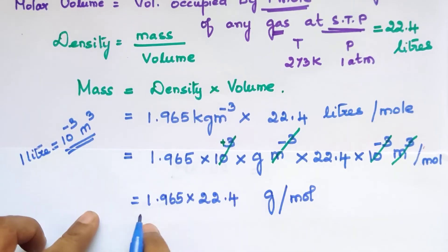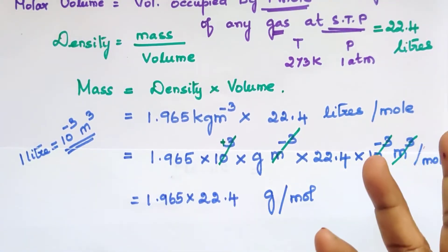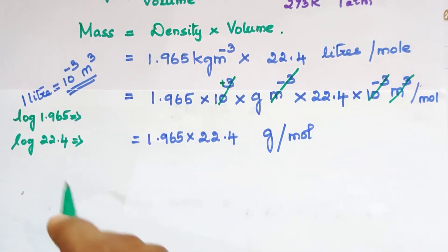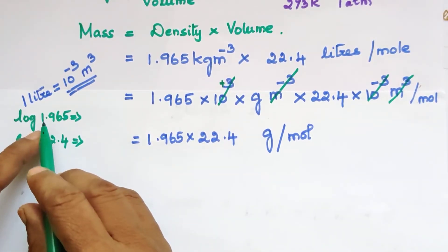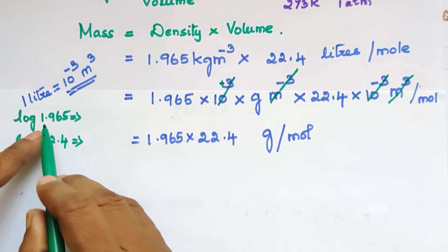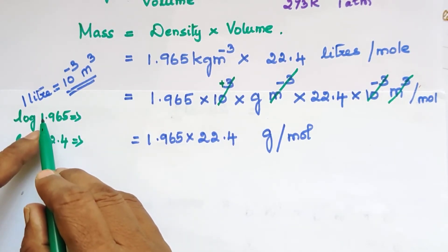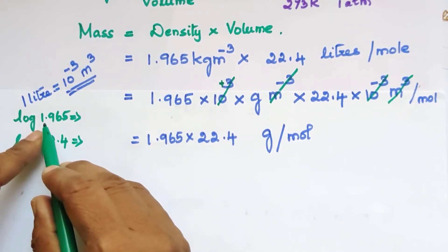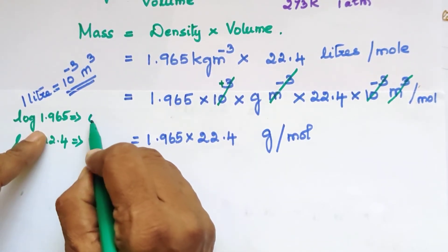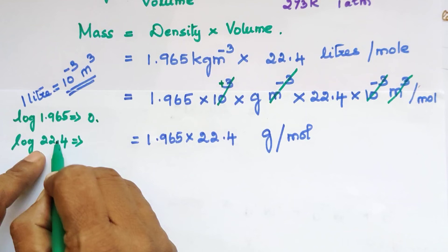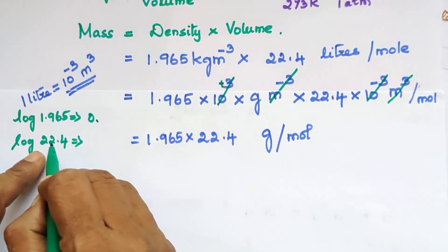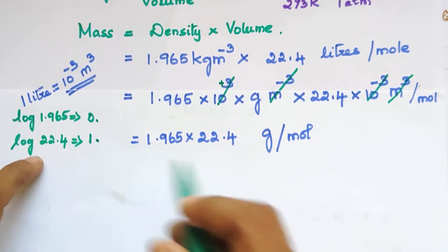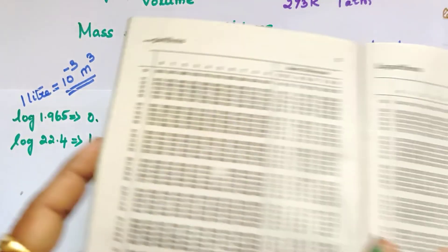This gives us 1.965 into 22.4, in grams per mole. We can multiply using logarithms. Log of 1.965 — the characteristic is 0 (1 digit before decimal), and the mantissa is taken from log tables. Log of 22.4 — the characteristic is 1. Now log values are added for multiplication.